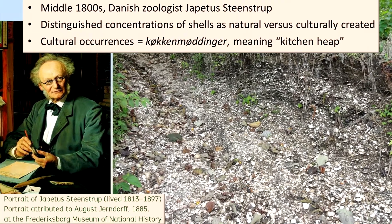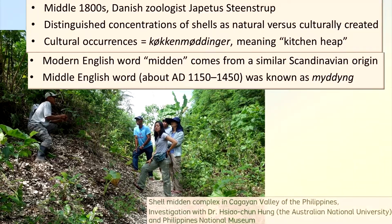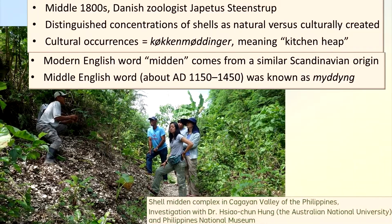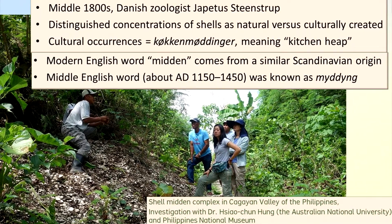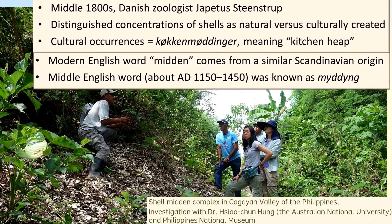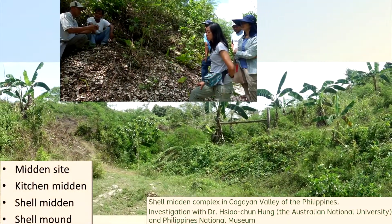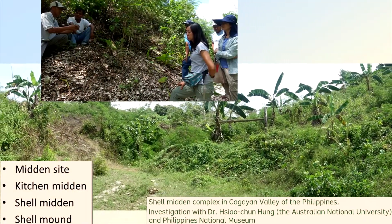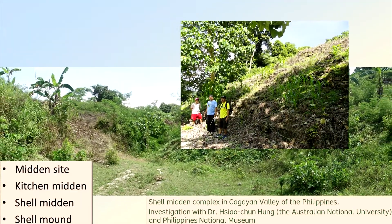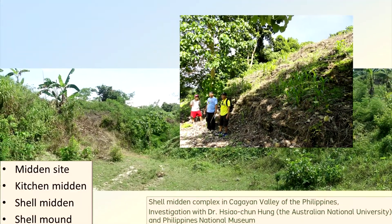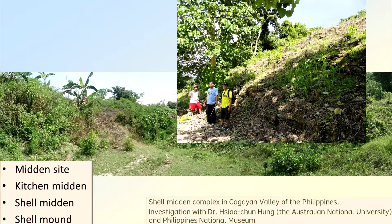The modern English word midden comes from a similar Scandinavian origin. A middle English word was known as mything. Since the middle through late 1800s, archaeologists have referred to midden sites, kitchen middens, shell middens, shell mounds, and other variations.